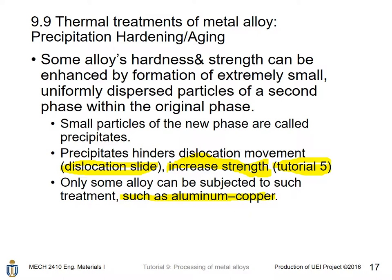Precipitation hardening or aging: some alloys' hardness and strength can be enhanced by forming extremely small, uniformly dispersed particles of a second phase within the original phase matrix. These precipitates hinder dislocation movement through dislocation strengthening as mentioned in Tutorial 5. Only alloys capable of forming these small particles qualify, such as aluminum-copper alloy.